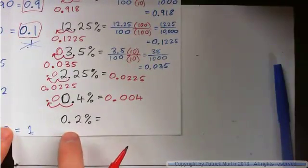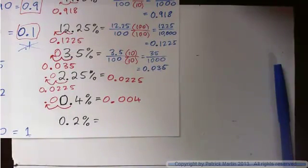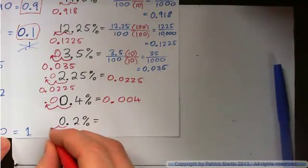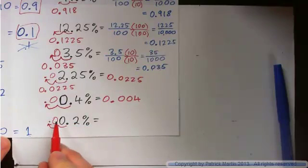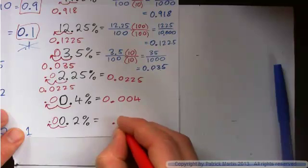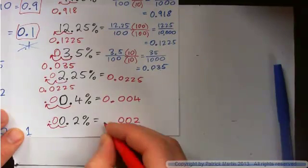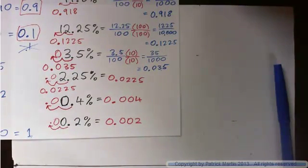Now press pause and do this one. 0.2 per cent? You must move the decimal point one, two spaces to the left. And then put in a zero placeholder. So we've got 0.002.